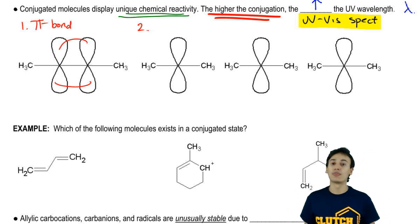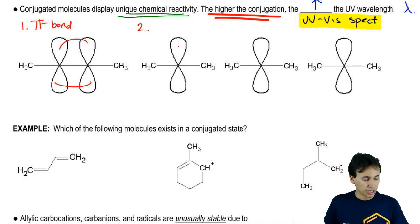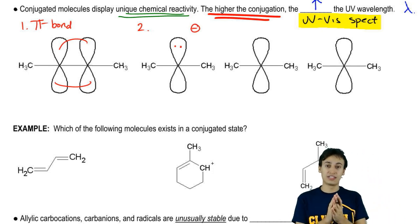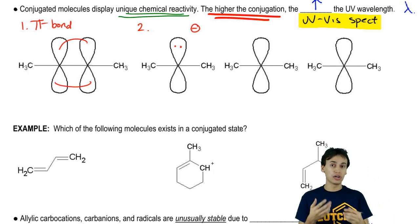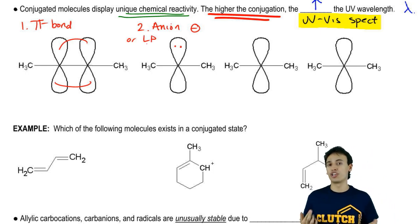Now, the other ones that are capable of resonating would be ones that have orbitals that are free to accept or donate electrons. That would be, for example, if you have basically a lone pair or an anion. I'm going to put here anion or lone pair, really depending on what the formal charge is of that molecule.